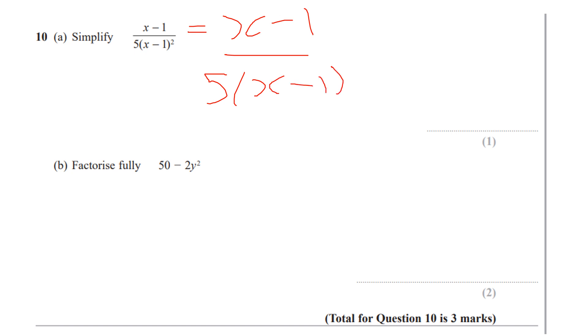Now, I've got an x minus 1 on the top and bottom that is common to both. So I can cancel down the x minus 1 from each side. So I'm going to cancel down there, cancel down there. So I'm left with 1 over 5 lots of x minus 1. And that would be worth one mark.